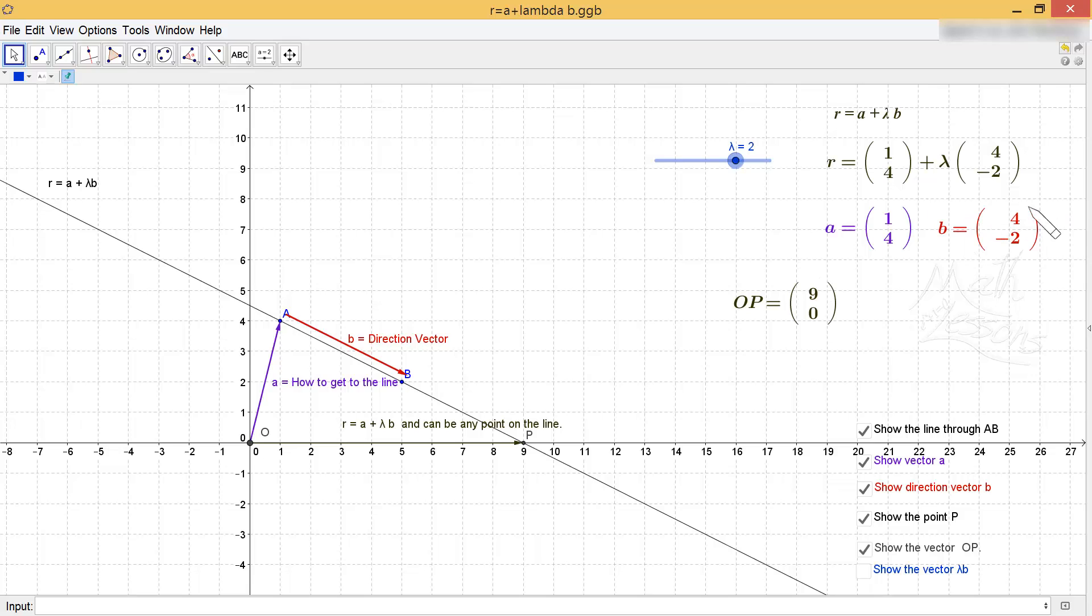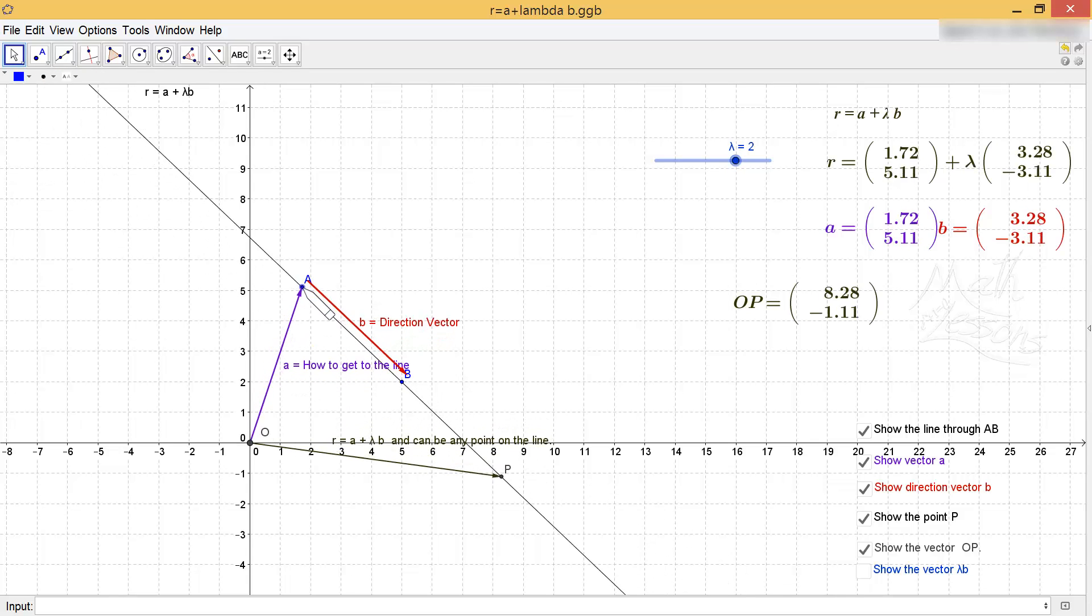So you add on two lots of this, so two lots of 4 added on to 1 is 9. Four plus two lots of -2 will give you 0, and therefore OP is (9, 0). And this is going to work no matter where we put our line.